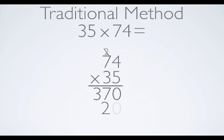I then multiply the 3 from 35 times the 7 from 74, which is a total of 21. Add the 1 from regrouping and I get 22.